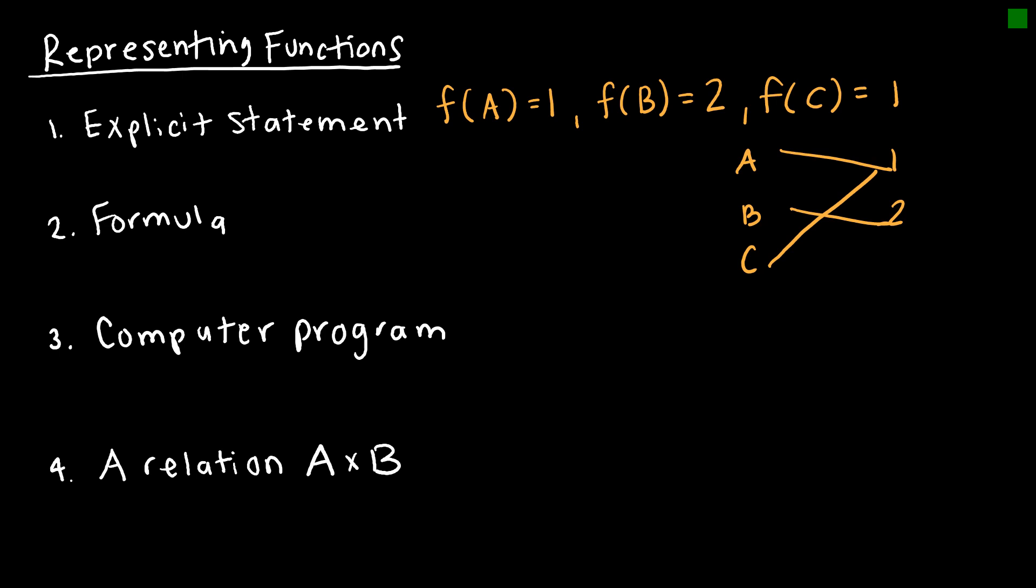And so this would be an explicit statement telling me that A maps to 1, B maps to 2, and C maps to 1. So that would be an explicit statement because there's no formula or function. It's just here's what maps to this. In a formula, obviously, we're just going to have a normal formula, f of x equals x squared plus 1. We might also have a computer program. More on that as we continue to study discrete mathematics. Or you might have a relation. So we talked briefly about relations and we will get into them in much more detail later in this course.